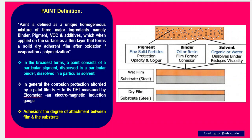In the broadest terms, a paint consists of a particular pigment dispersed in a particular binder dissolved in a particular solvent.